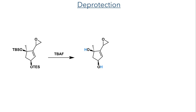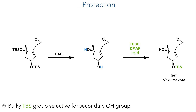The silyl groups were then deprotected using TBAF, and the secondary alcohol was selectively protected using TBS chloride. This is quite a bulky protecting group, and therefore does not react with the sterically hindered tertiary alcohol.